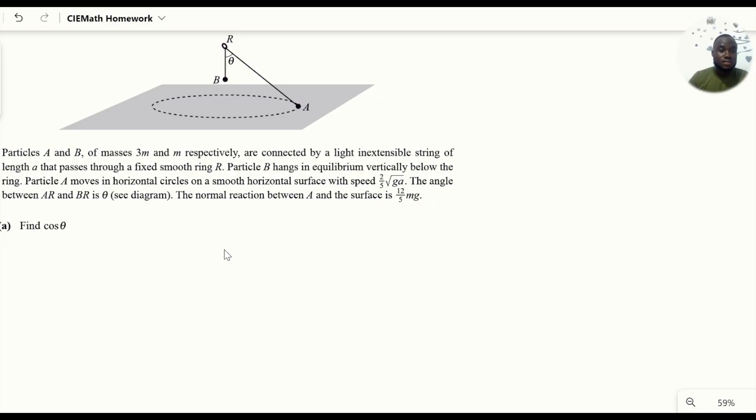For this third question, two particles A and B with mass 3m and m respectively are connected by a light inextensible string. The ring R is smooth so there's no friction, and it's fixed so its position is not changing. B hangs in equilibrium vertically below the ring.